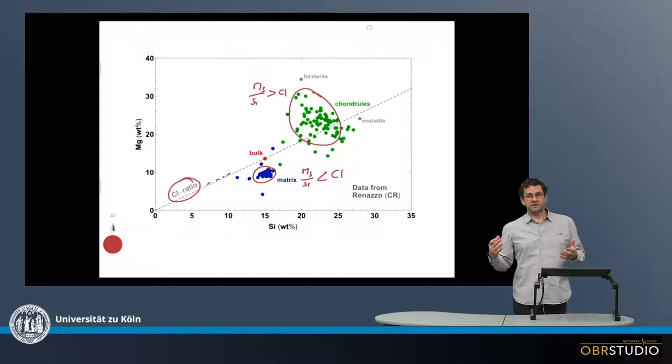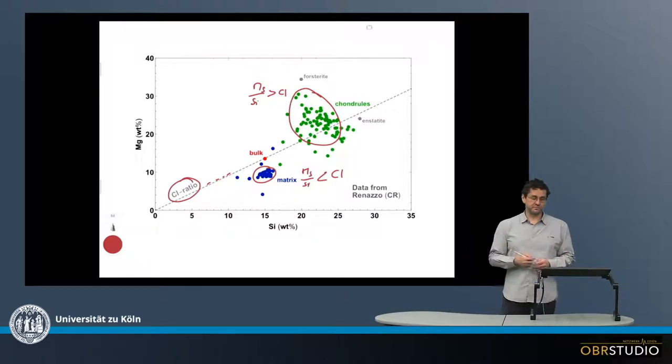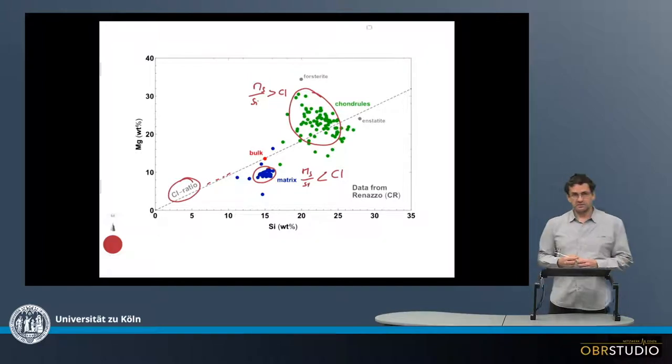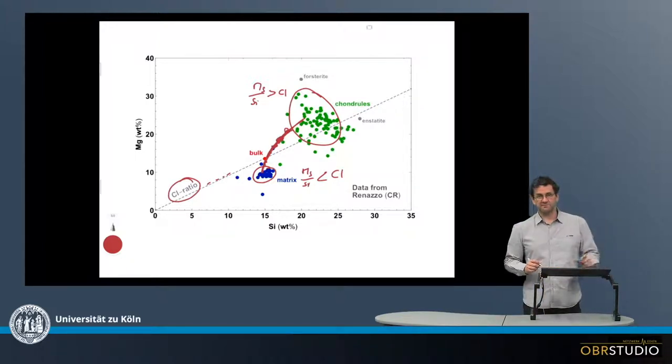Now of course chondrules and matrix together must form the bulk. But the important thing is that they not only form the bulk, but the bulk could plot anywhere on a mixing line between chondrules and matrix. If this is the mixing line, then the bulk could plot anywhere on this line.